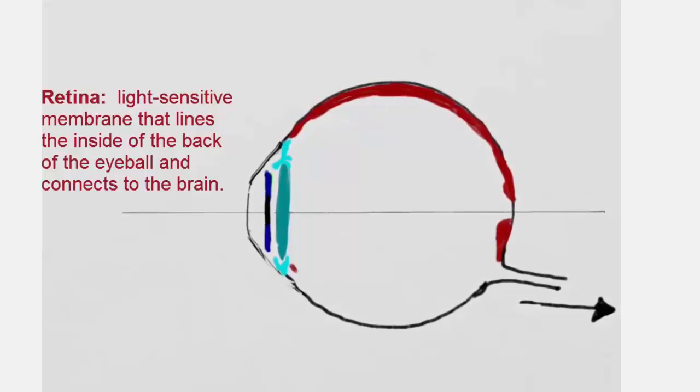These are neurons that transduce light to sensory signals, as well as neurons that do some initial processing of those signals. They send their information through axons leading out the optic nerve to the brain.